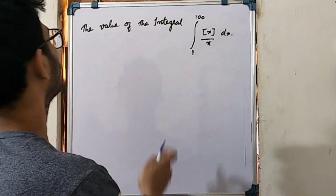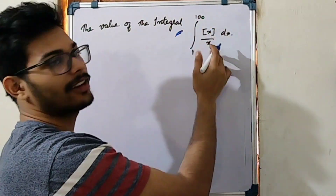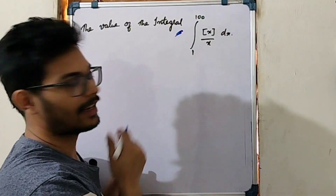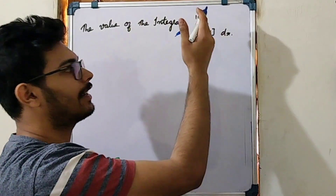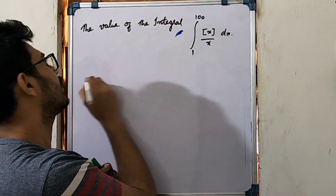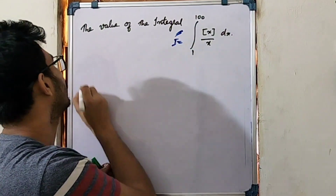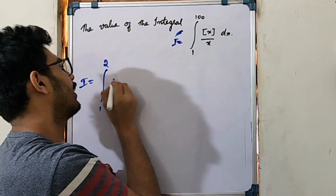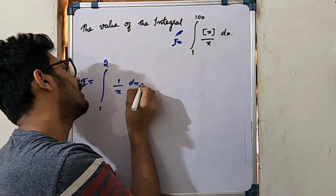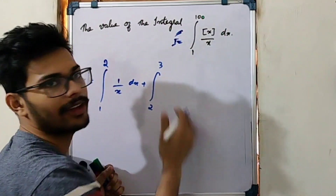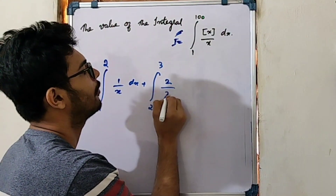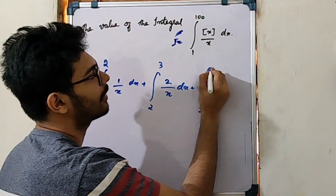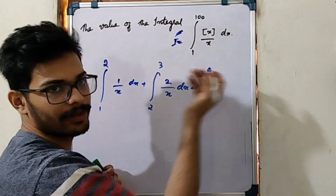Now let's talk about the integral. The value of the integral from 1 to 100 of floor(x) divided by x dx. Why do we find the floor function integration? We change the integral by splitting: integral from 1 to 2 of floor(x) divided by x dx, plus integral from 2 to 3 of floor(x) divided by x dx.